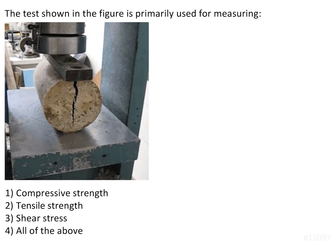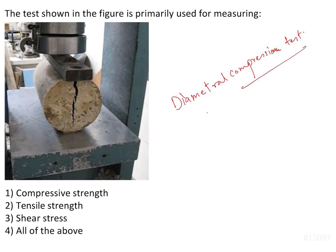The test shown in the figure is primarily used for measuring: compressive strain, tensile strain, shear stress, or all of the above? Looking at this image, it is showing a diametral compression test. This diametral compression test is used to measure the tensile strain — diametral tensile strain. So the answer would be tensile strain for this question.